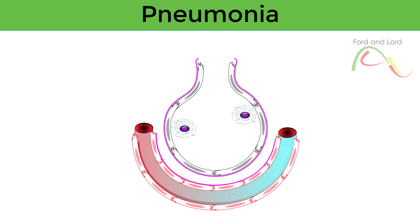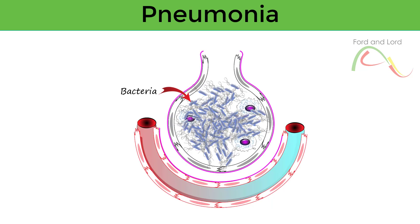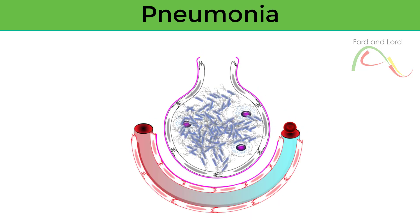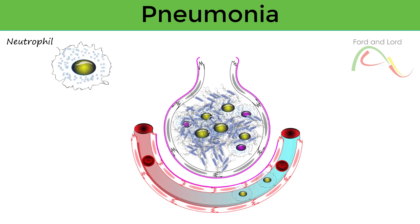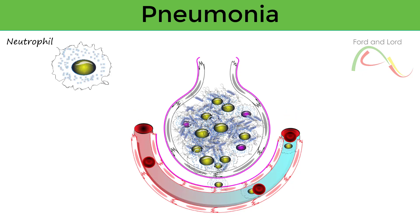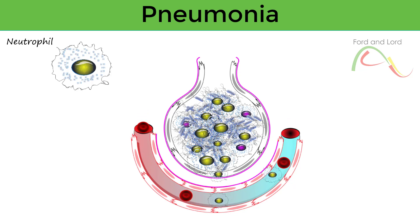However, there are times when pathogens manage to overcome the defense mechanisms or outnumber the macrophages, and start colonizing within the alveoli and terminal bronchioles. Some of these pathogens may release toxins within the alveoli and can cause damage to the alveolar epithelium. Macrophages sense the danger and release molecules known as cytokines that activate and invite other white blood cells, such as neutrophils, to the site of infection. The result is a complex cascade of inflammatory processes. Neutrophils are quickly recruited to the site of infection to fight off the offending microbes, passing through the alveolar capillary membrane to enter the alveoli and airspaces. The alveolar capillary membrane becomes permeable for larger molecules and cells.